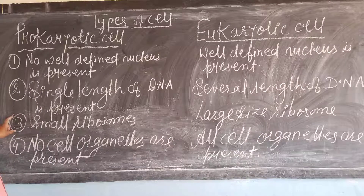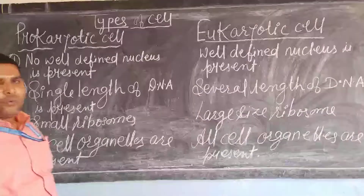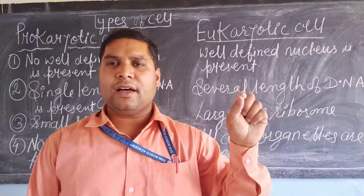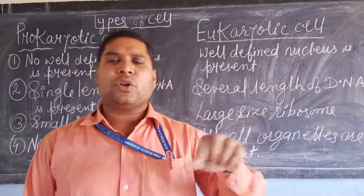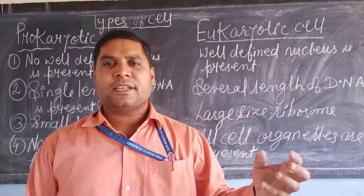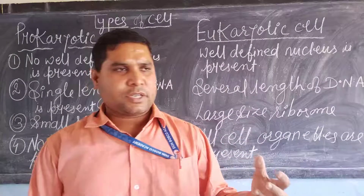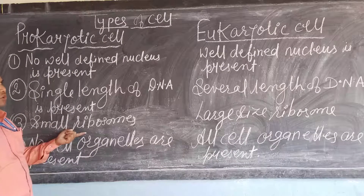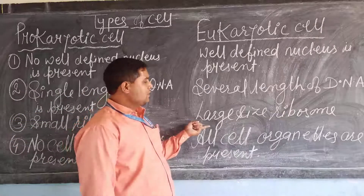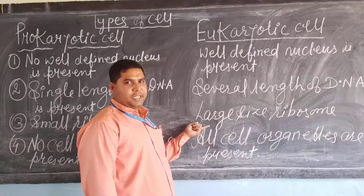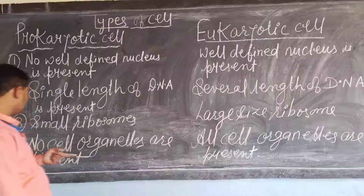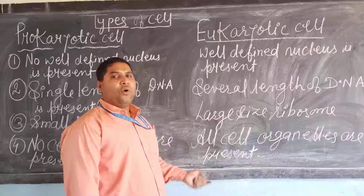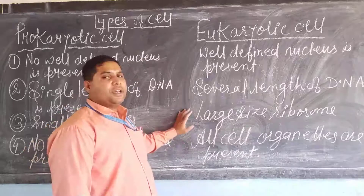In the prokaryotic cell, small ribosomes are present. As you know, the main function of the ribosome is protein synthesis in the cell. If there is no proper amount of protein synthesis, the cell cannot develop. So in the prokaryotic cell, the ribosome size is very small, whereas in the eukaryotic cell, larger ribosomes are present. No cell organelles are present in prokaryotic cells.